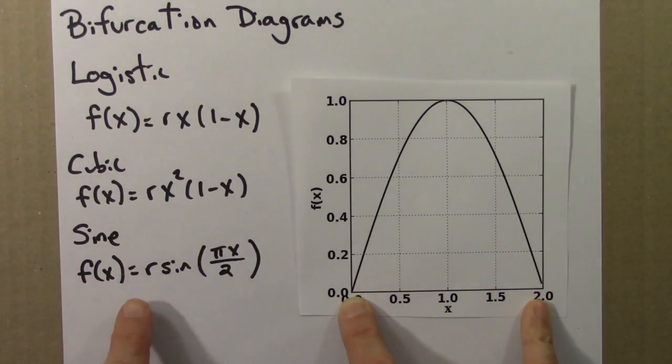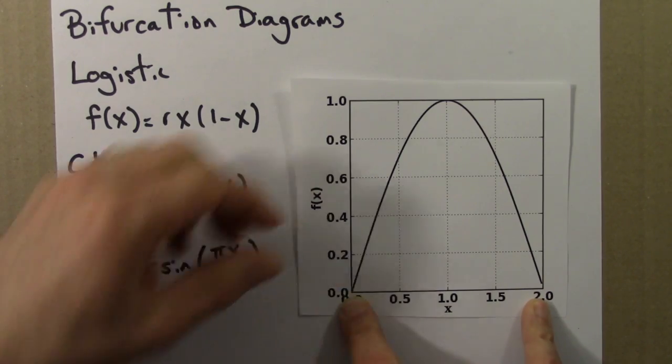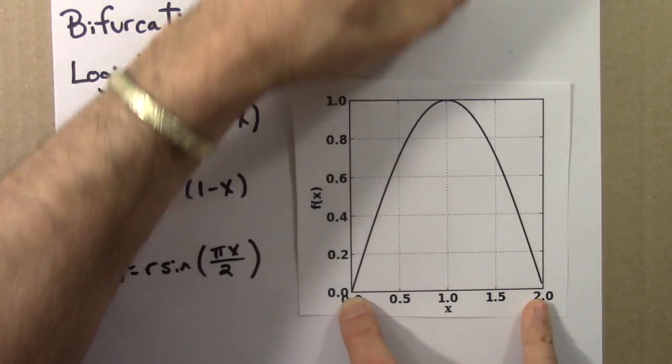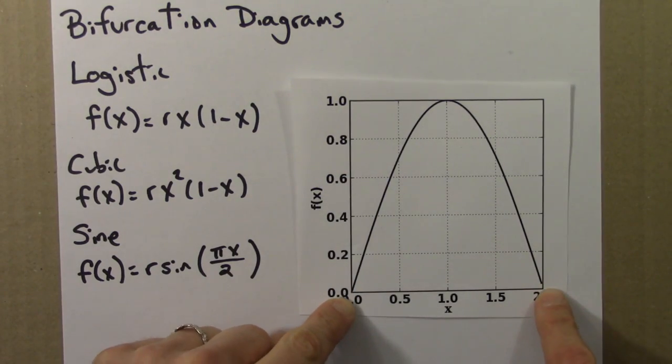As for all of these functions, increasing r stretches this function up. So it'll make this steeper and this higher, but it'll keep the zeros here.